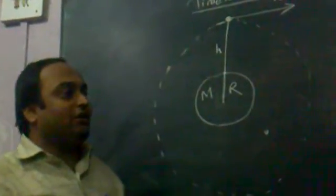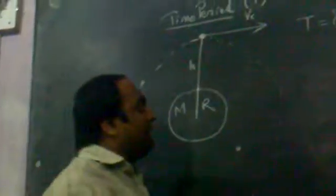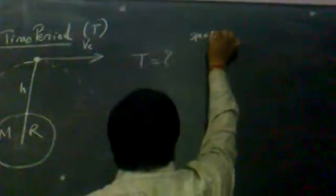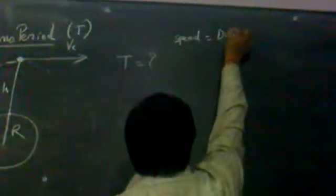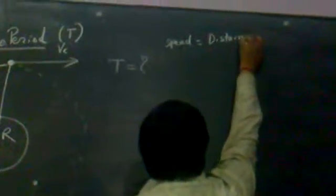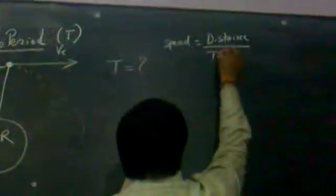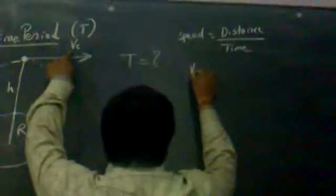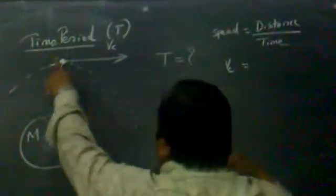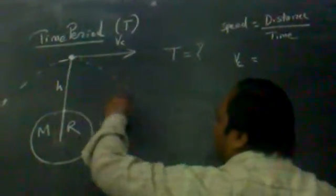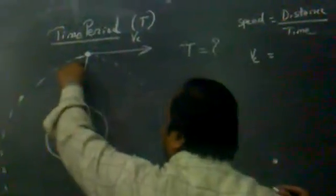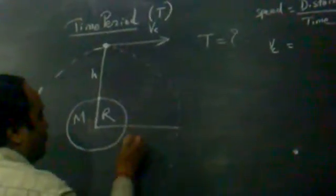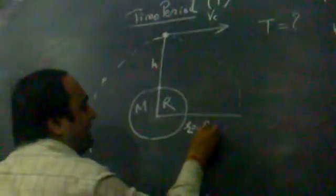We will recall that speed equals distance upon time. The satellite is moving with a speed which is the critical velocity vc. If the satellite is supposed to move in one complete circular orbit, then the distance is the circumference, equal to 2π times small r, where small r is R plus h.